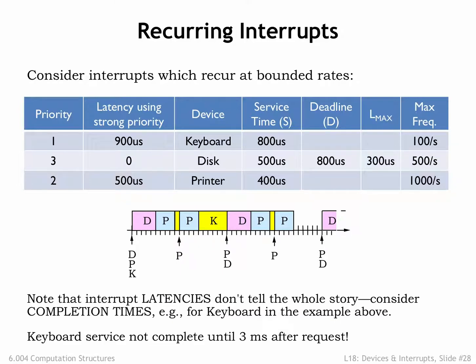The maximum latency before a keyboard request starts is indeed 900 microseconds, but that doesn't tell the whole story. The keyboard handler is continually preempted by higher-priority disk and printer requests, and so it doesn't complete until 3ms after its request was received. This illustrates why real-time constraints are best expressed in terms of deadlines and not latencies. If the keyboard deadline had been less than 3ms, even the strong priority system would have failed to meet the hard real-time constraints — because there simply aren't enough CPU cycles to meet the recurring demands of the devices in the face of tight deadlines.